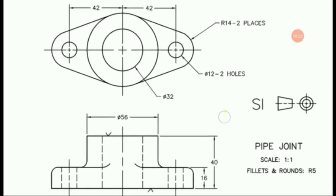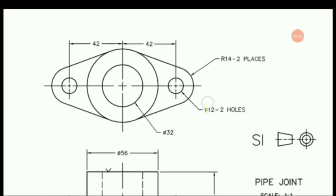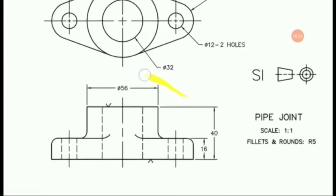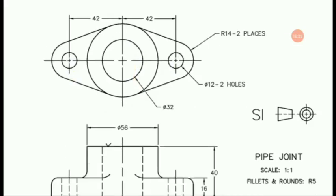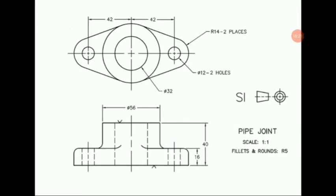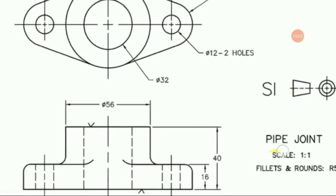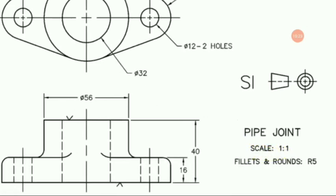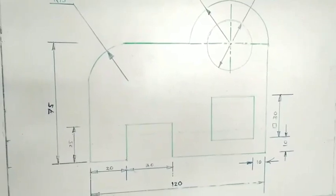A typical drawing example is shown with different dimensions. R14 is the radius of a particular curve. Phi 12 denotes diameter of two holes, each with a diameter of 12. Diameter 32 is for a circle, 42 is from the center line to one end, and 42 again from the center line to the other end. This drawing is a top view and front view of a pipe joint at a scale of 1:1 with first angle projection symbol.